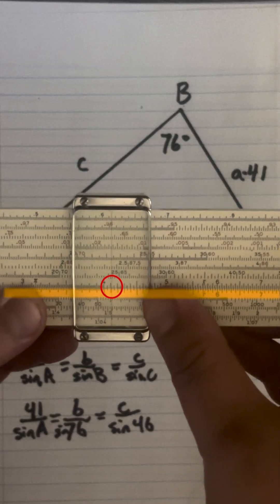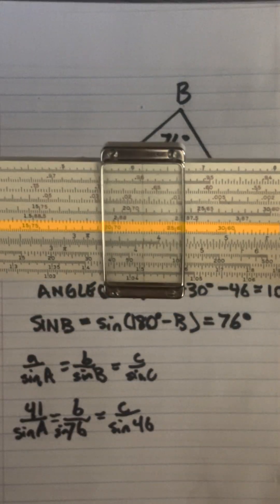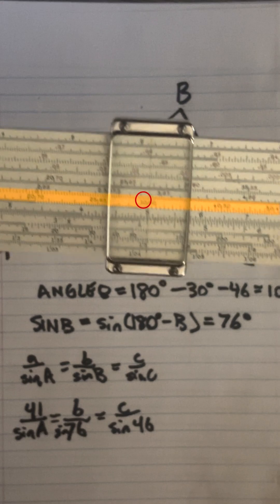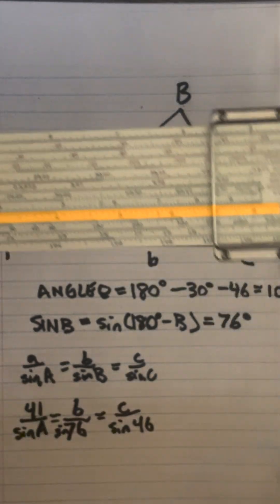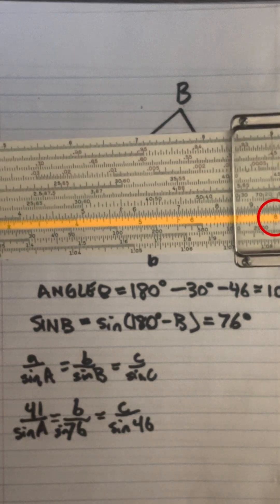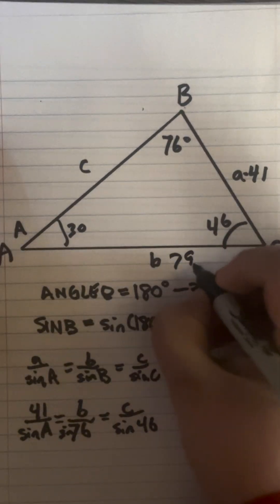So let's place 41 on the D scale and we'll put sine of 30 up top. So now if we go to sine 76 down below is 79.5 which gives us side B 79.5.